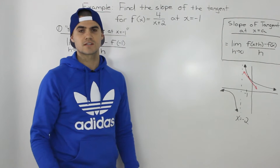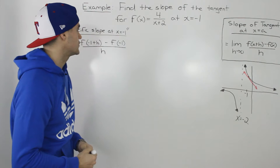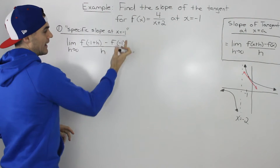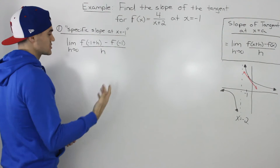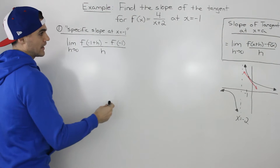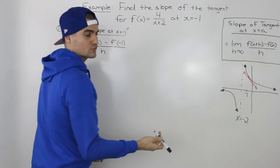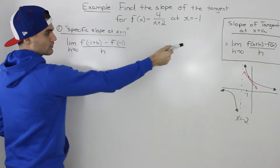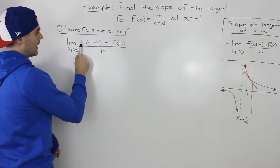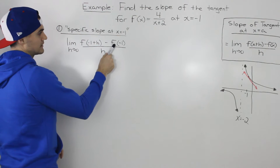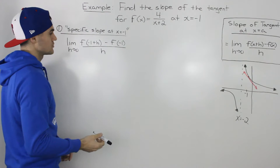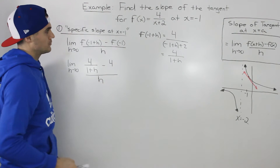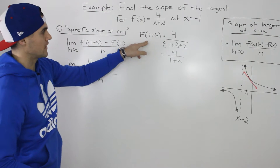I'm going to show you two different ways to do it. The first way is to find the specific slope at x = -1 using the slope of the tangent formula, plugging in negative 1 for the a value. So we get f(-1+h) minus f(-1), all over h. f(-1+h) simplifies to 4/(1+h) with this function, and I showed that here.